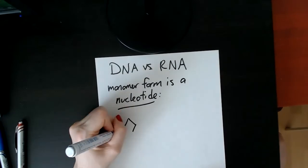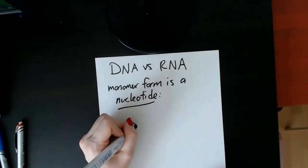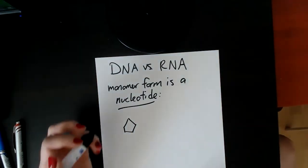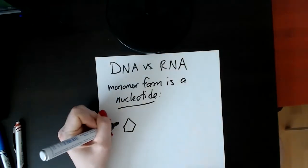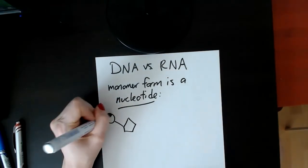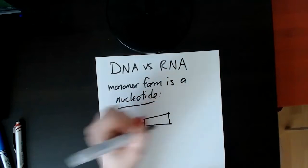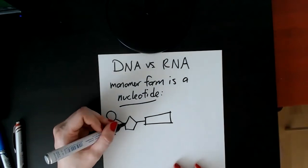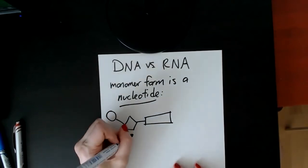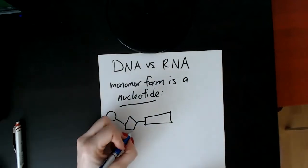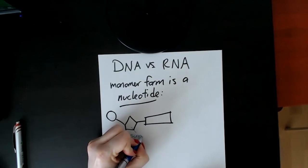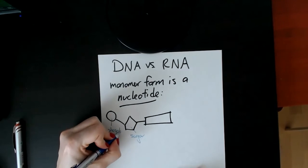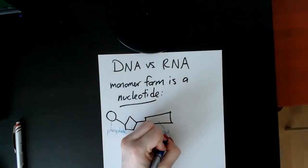There are three parts to a nucleotide. You have a sugar, a phosphate group, and a nitrogenous base. So this is the sugar, this is the phosphate group, and this is the nitrogenous base.